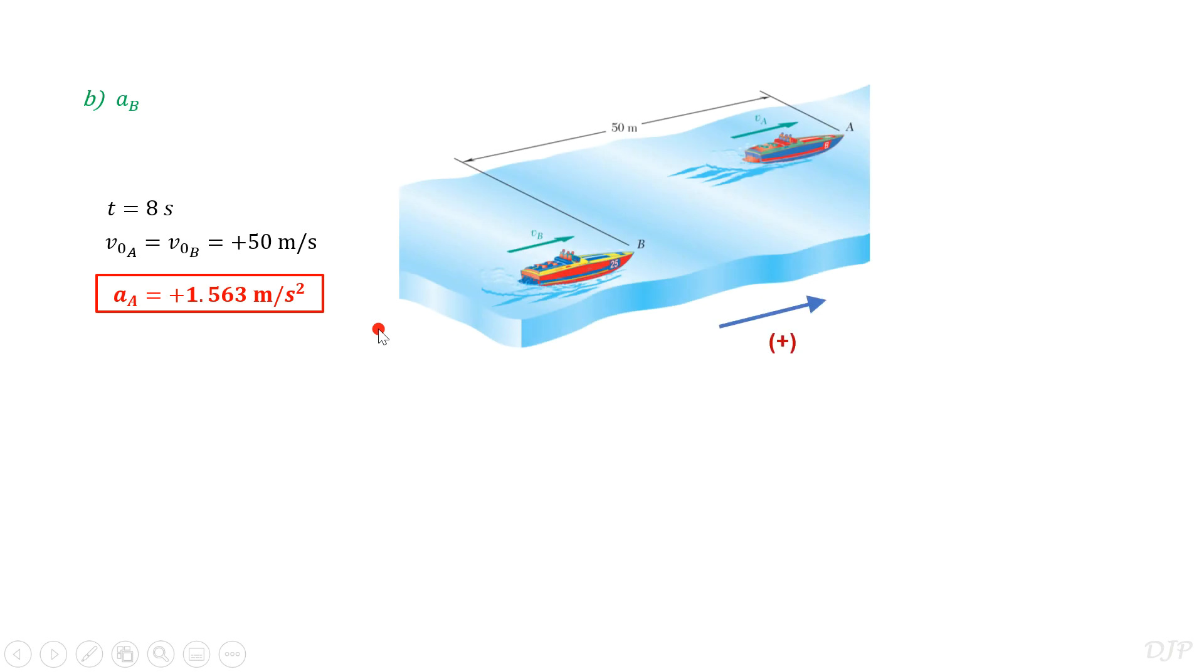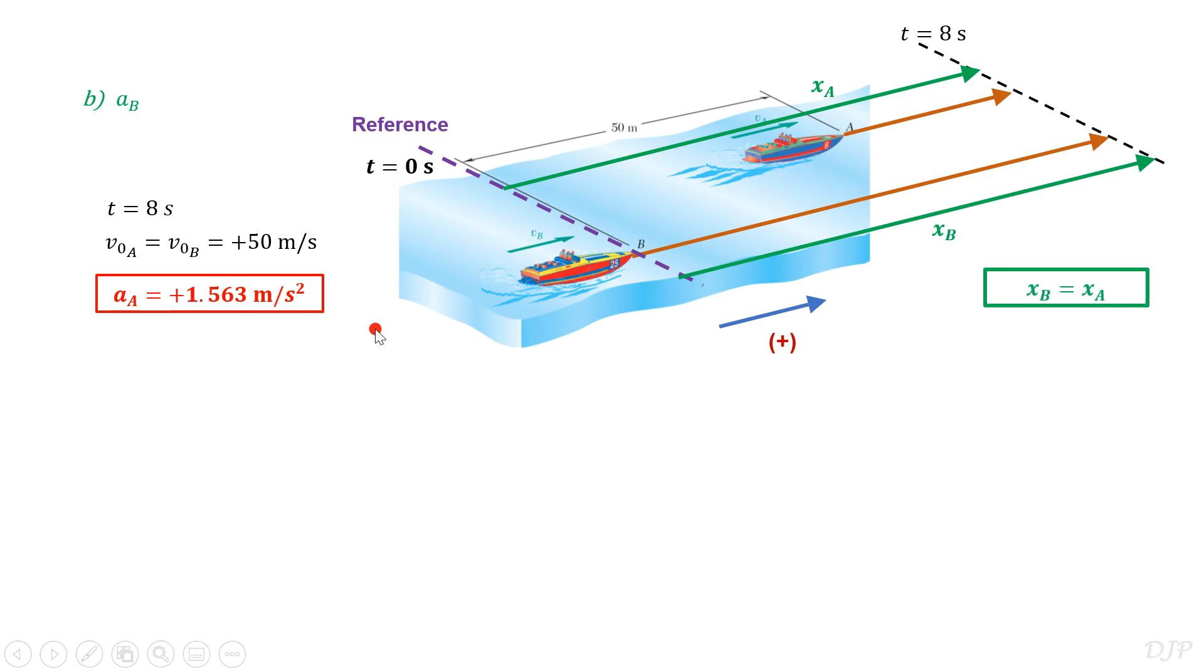Using the given figure, we can set the reference at the initial position of boat B. As the two boats travel until they met at 8 seconds, their position will be measured starting from the set reference. This follows that the final position of boat B is equal to the final position of boat A.